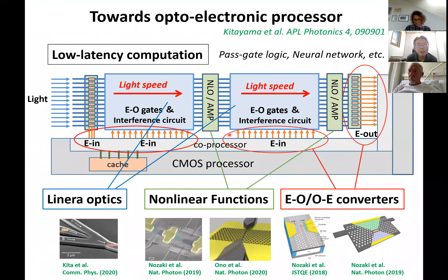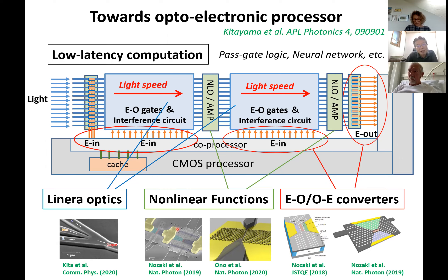This is a summary of the first part. We are working toward an optoelectric processor at NTT. We are thinking of this kind of optoelectric computation device where computation is done by light propagation, mostly consisting of linear optic devices like MZI circuits. But we still need nonlinear function repeatedly, so we think optical transistors or graphene devices may play an important role for the nonlinear part. Also, this computation circuit should be connected to CMOS processors, meaning EO and OE converters are very important. This is our future plan.